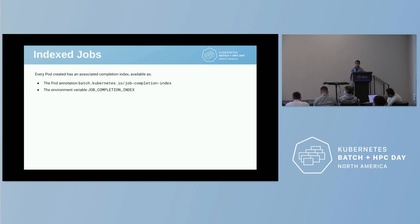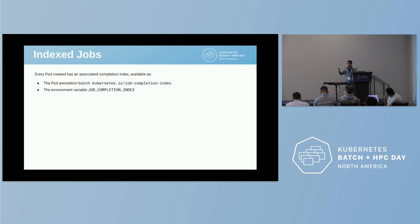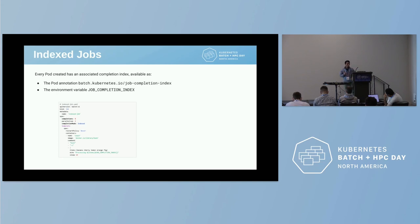The first one is, maybe some of you are already familiar with this — indexed jobs. Indexed jobs is simply the ability of creating a single job for a parallel application where each pod in the job has a different index, and this index is available as simply a number in an environment variable.